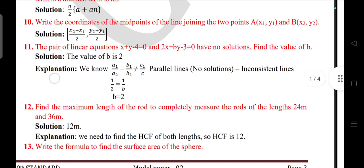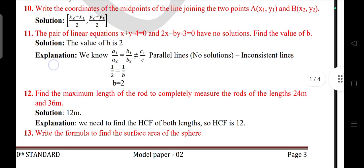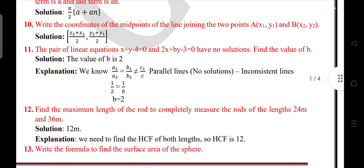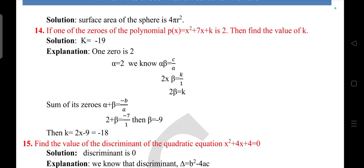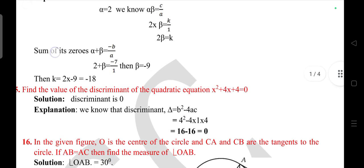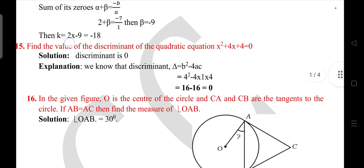Question 13: Write the formula to find the surface area of sphere. Surface area of sphere is equal to 4πr². Question 14: If one of the zeros of polynomial p(x) = x² + 7x + k is -2, then find the value of k. Answer is -18. Question 15: Find the value of the discriminant of the quadratic equation x² + 4x + 4 = 0.